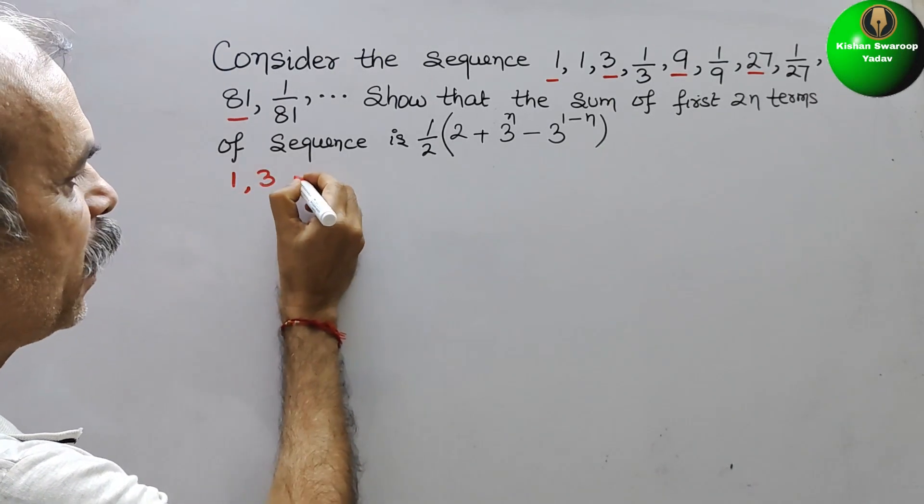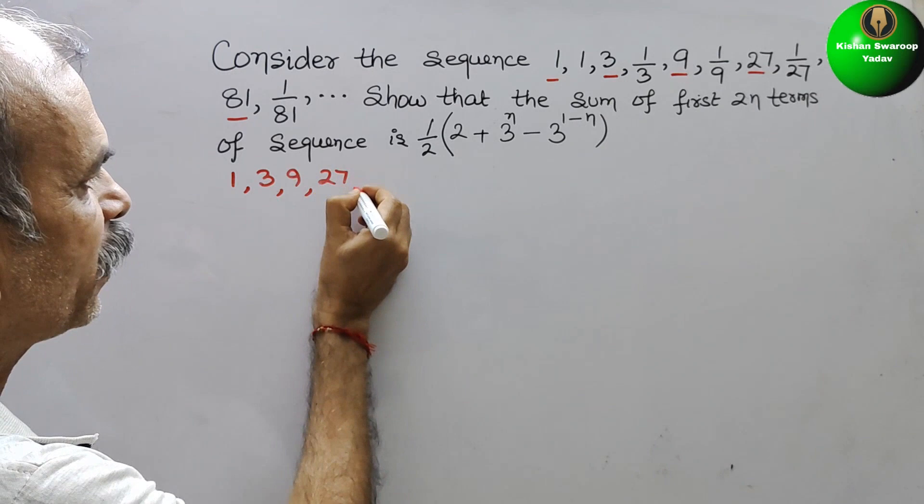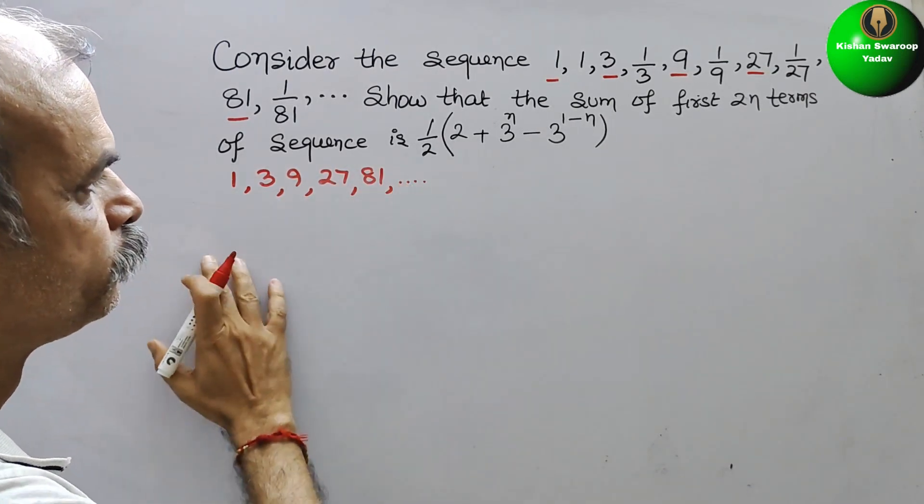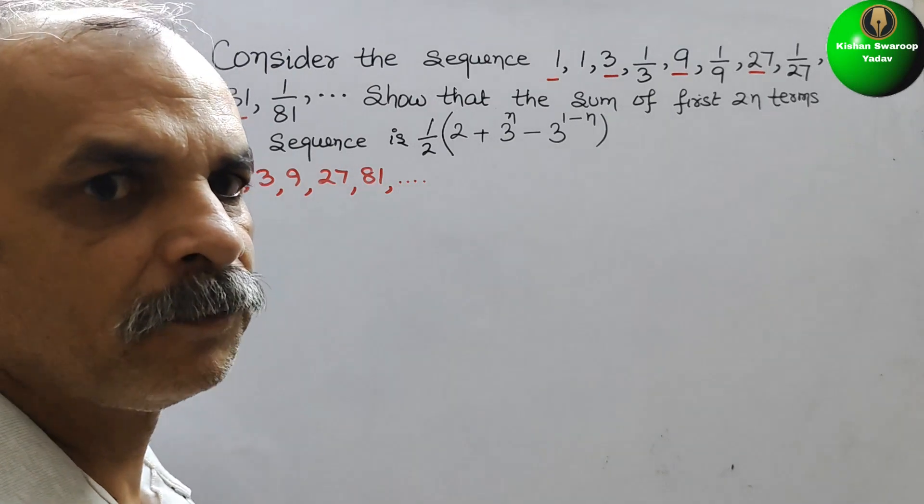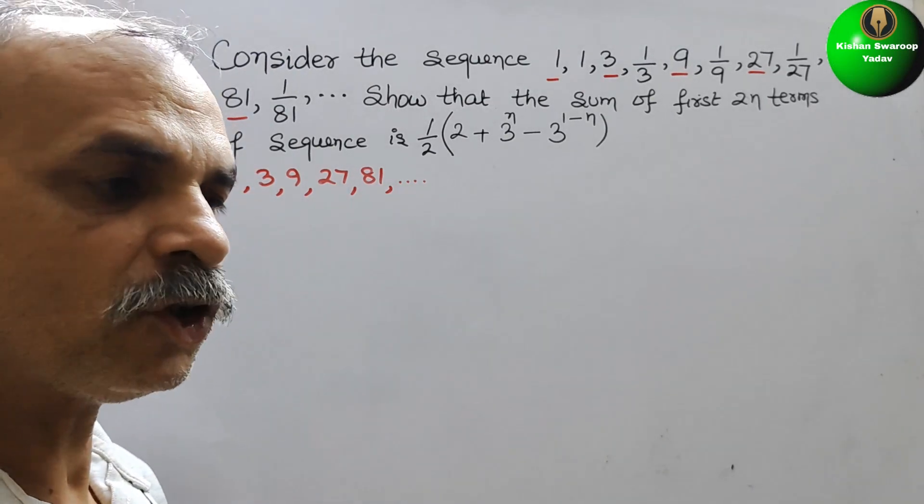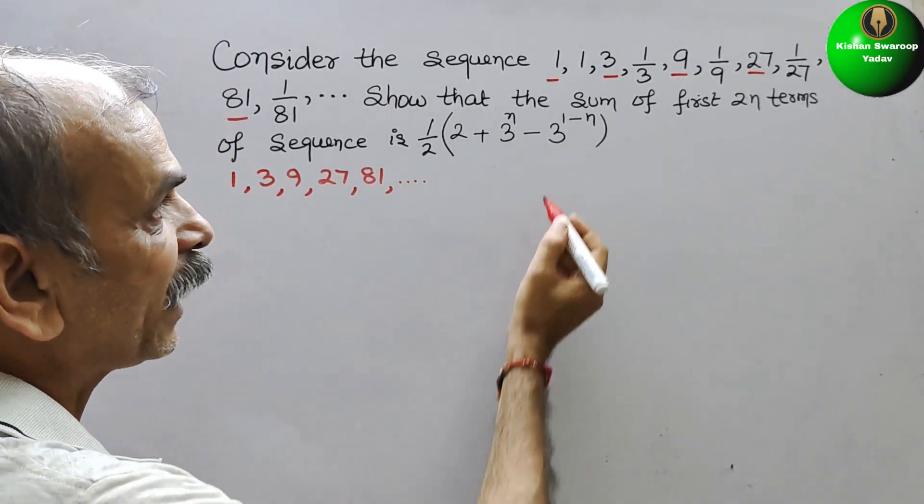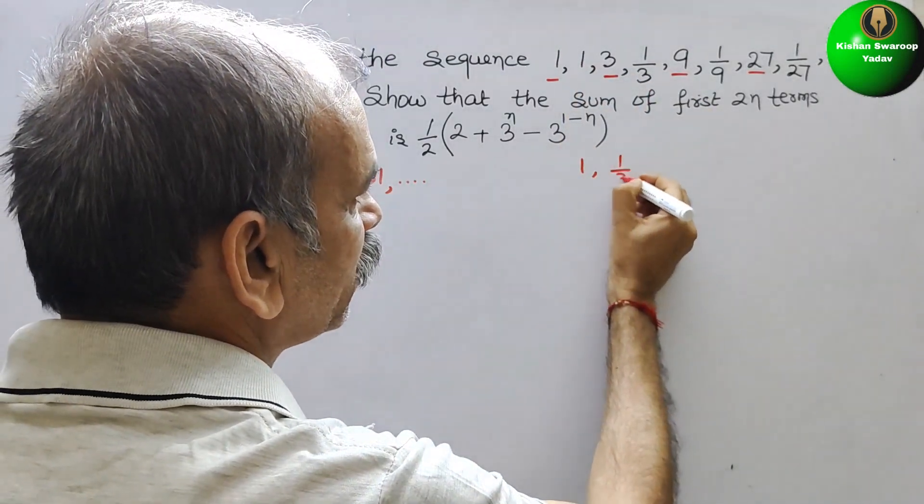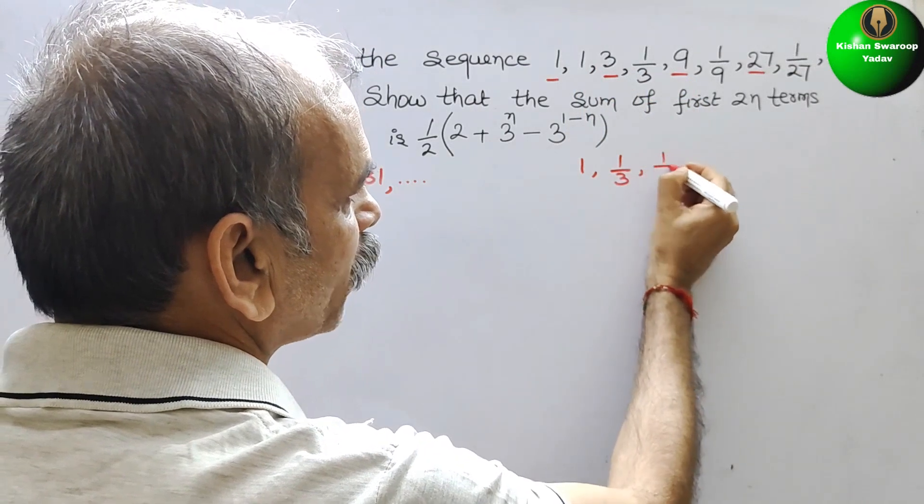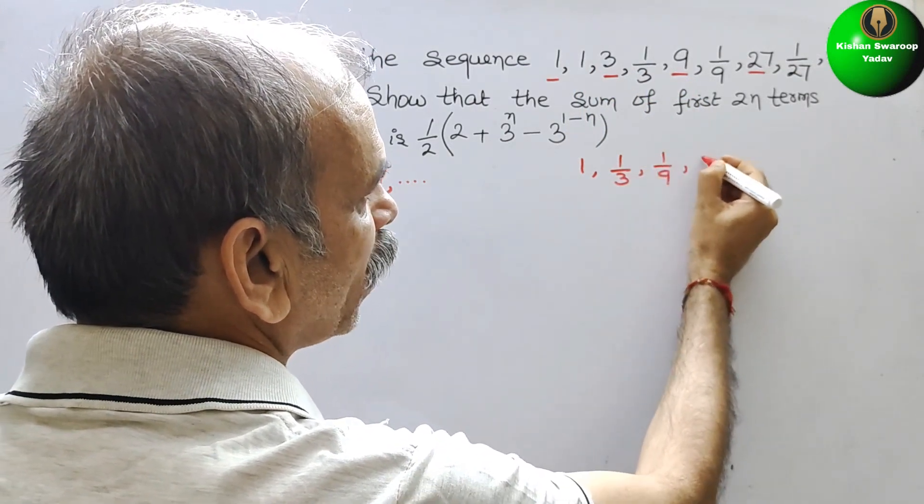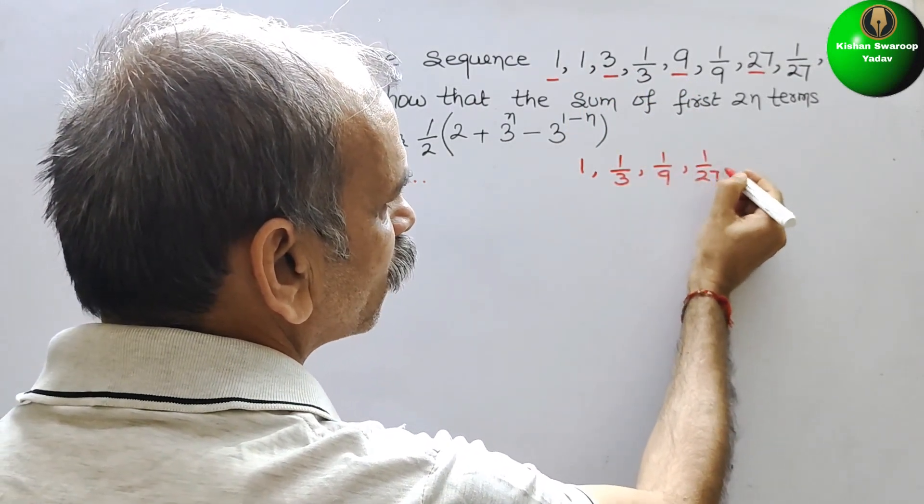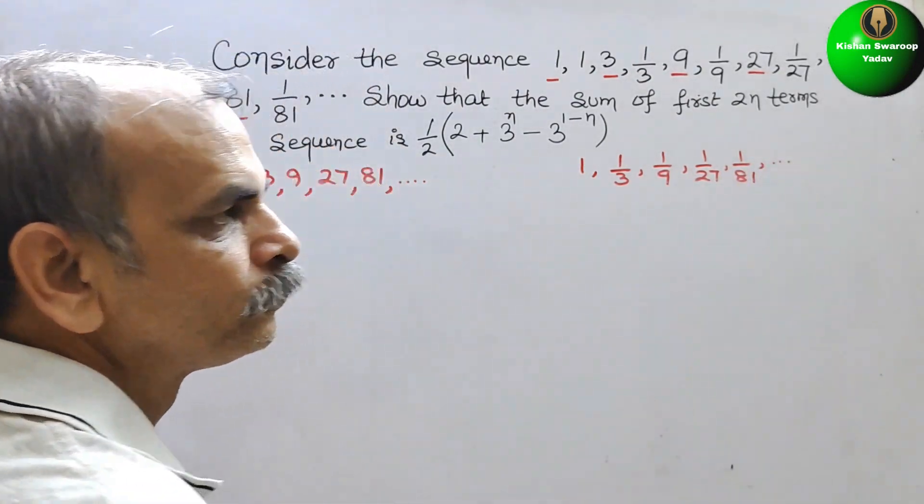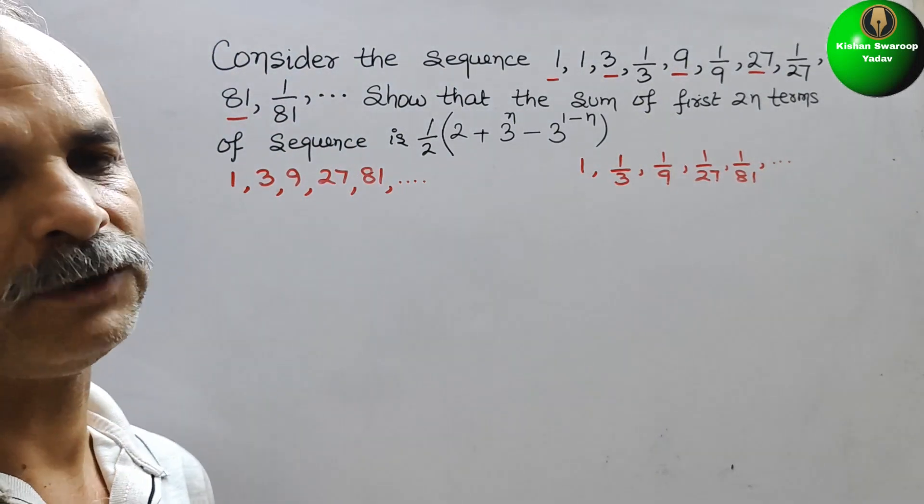Second sequence is your even places. That is 1, 1/3, 1/9, 1/27, 1/81, and so on. So these are the 2 sequences.